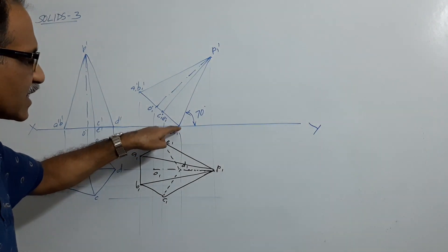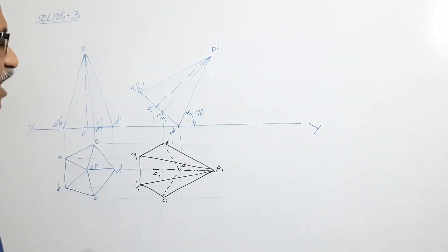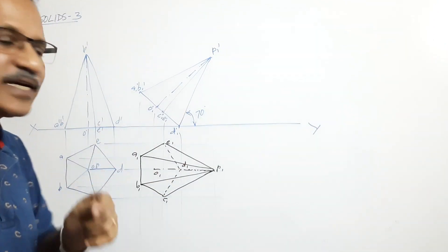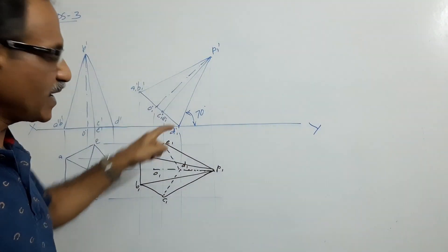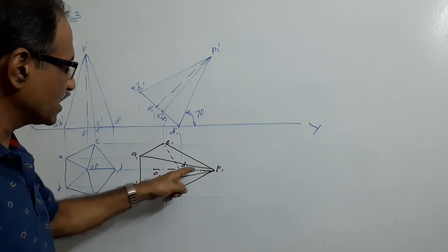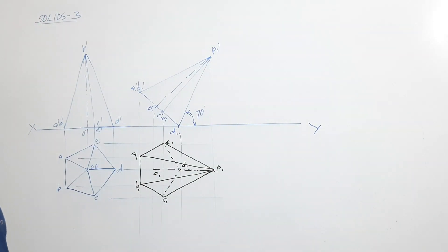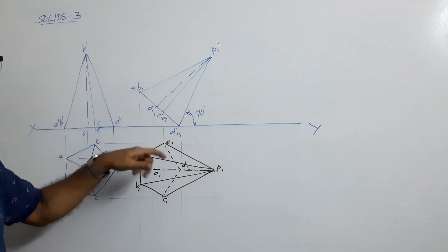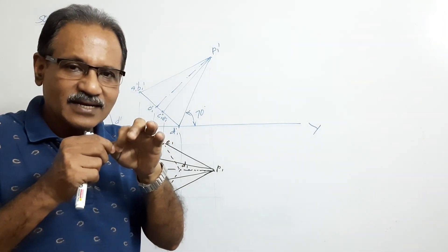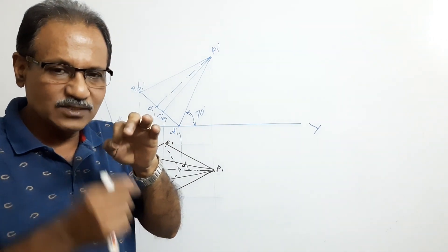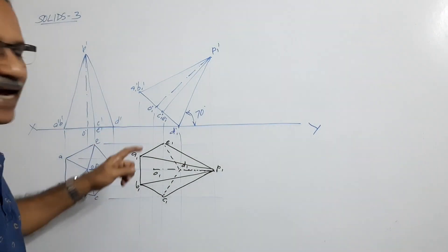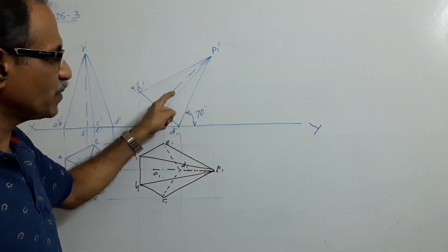The pyramid is now resting on HP on corner B. The axis is parallel to VP and making some inclination to HP. That angle is not given; instead you are given that the slant edge is parallel to VP and makes 70 degrees to HP. The elevation of the slant edge is D1 dash P1 dash; its plan is D1 P1. A slant edge of a pyramid is a line connecting the apex to the corners of the base — those are called the slant edges.